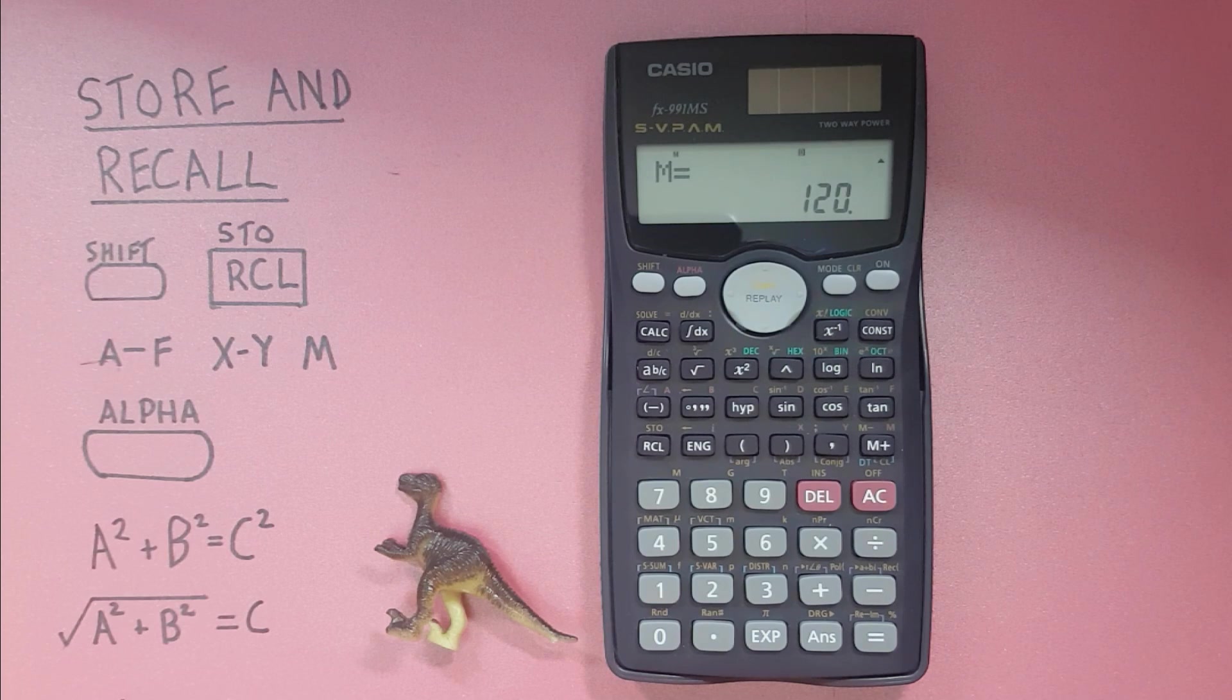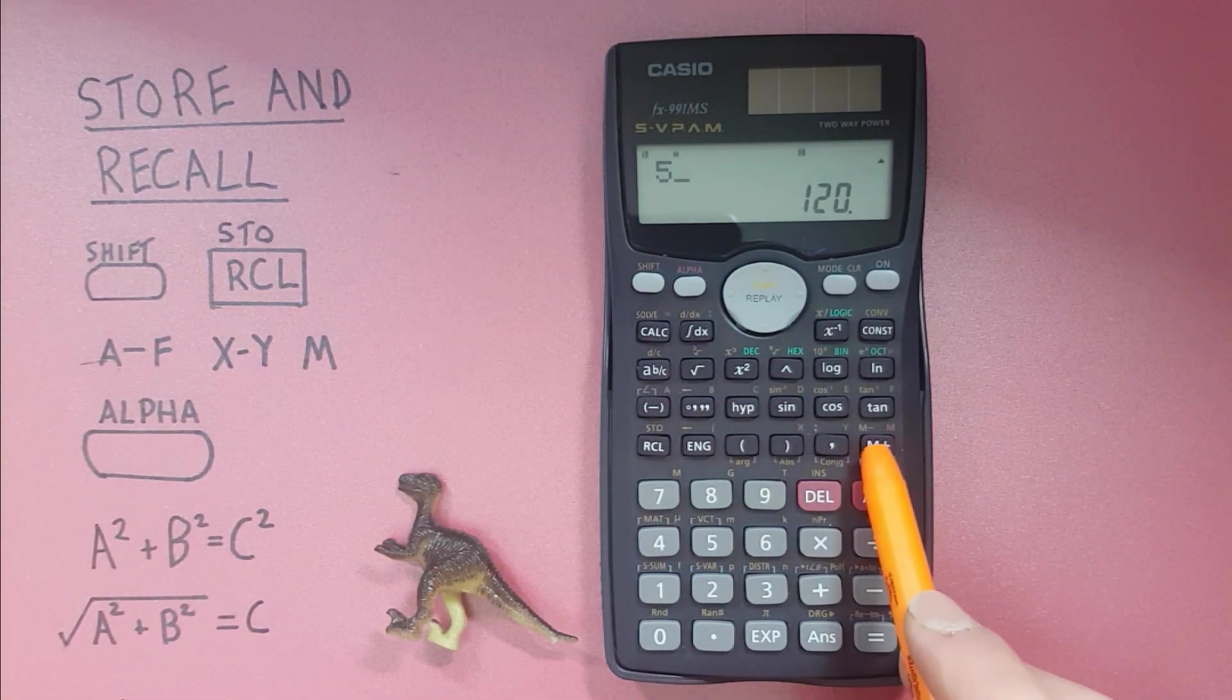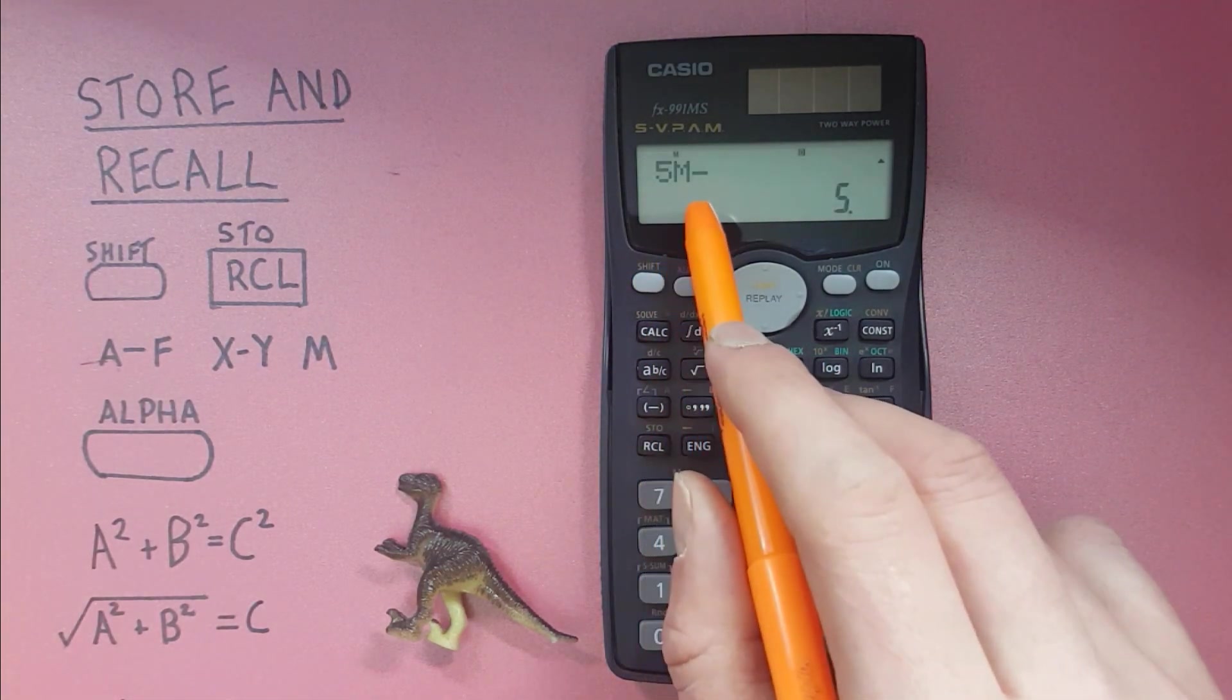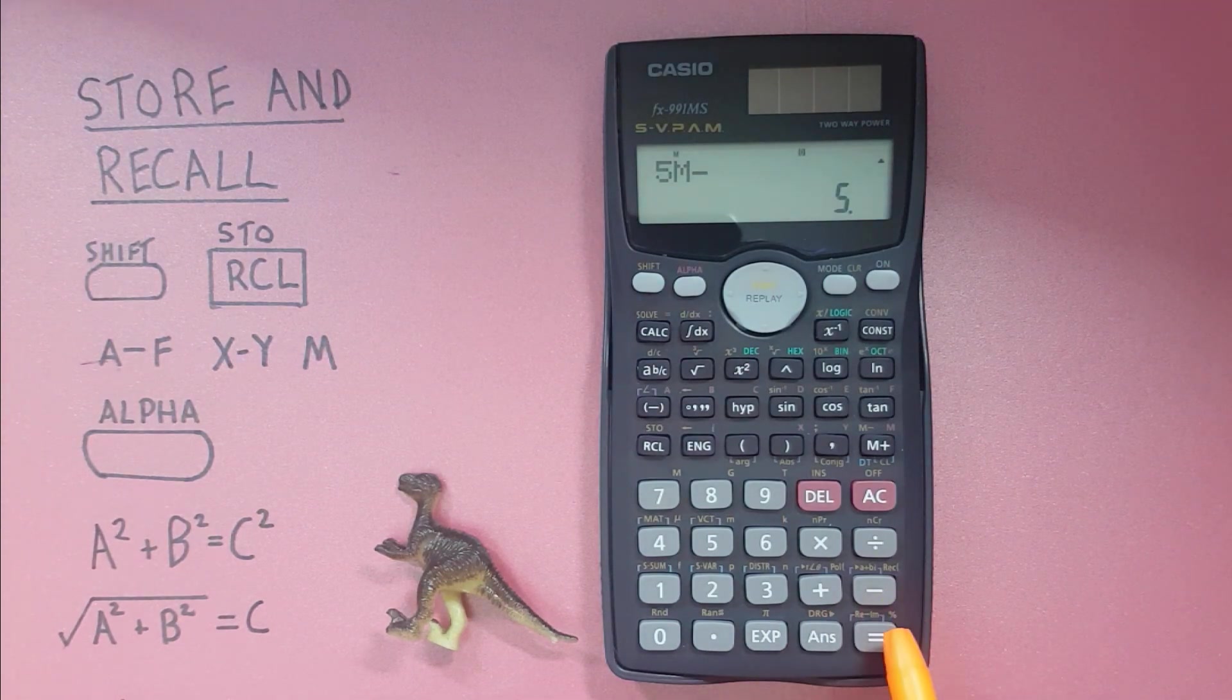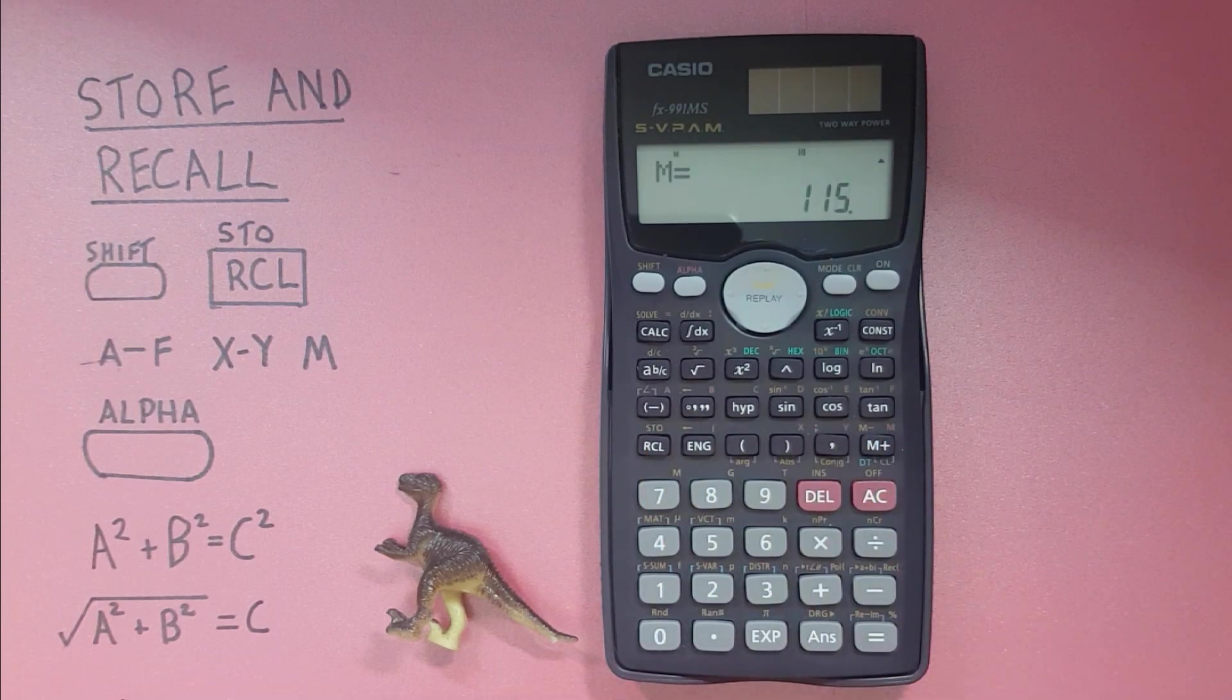We can also subtract from it, so let's take 5 away, 5 shift M minus, there we go 5 M minus, and if we recall it now we should get 115, and there we go.